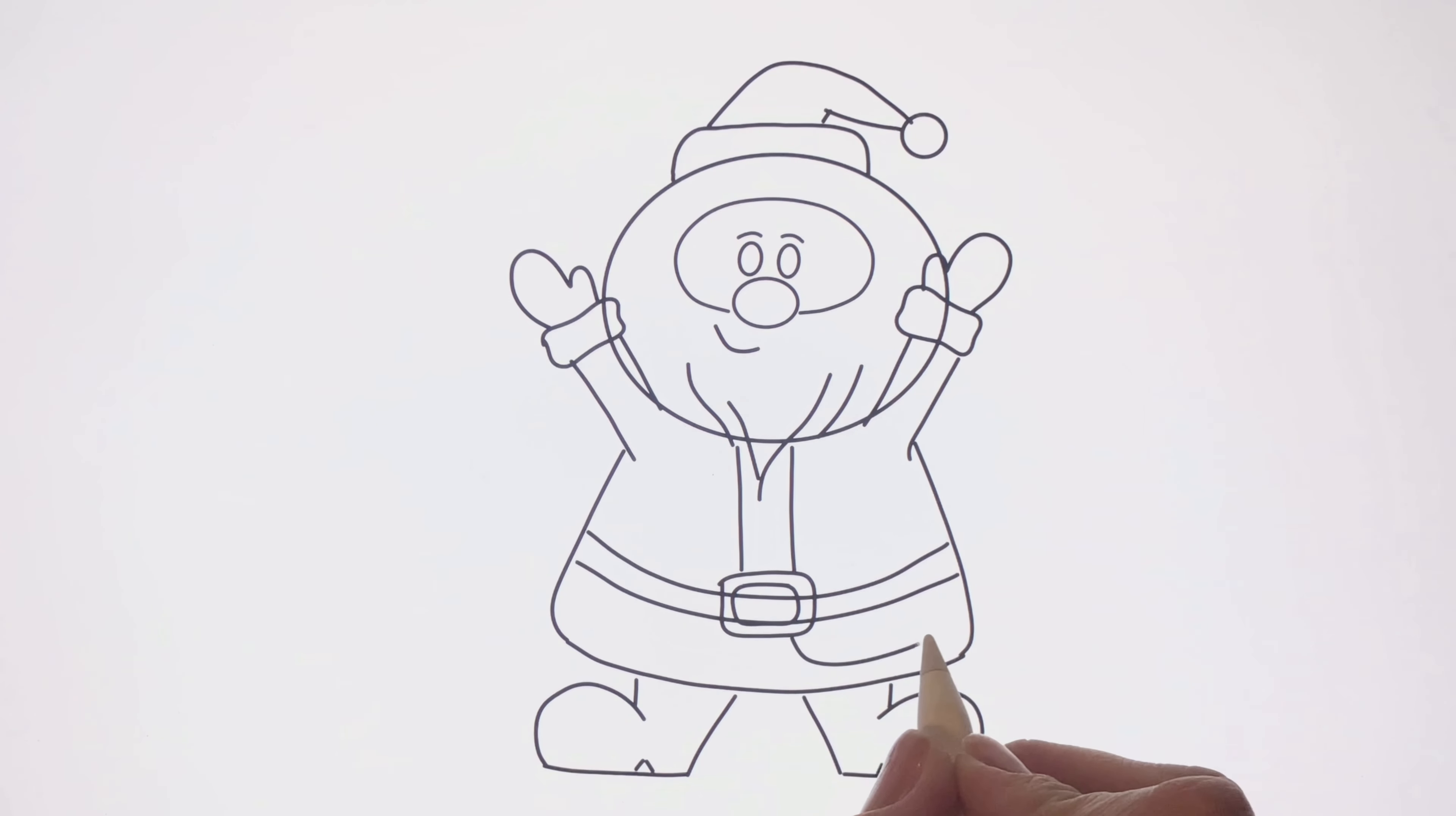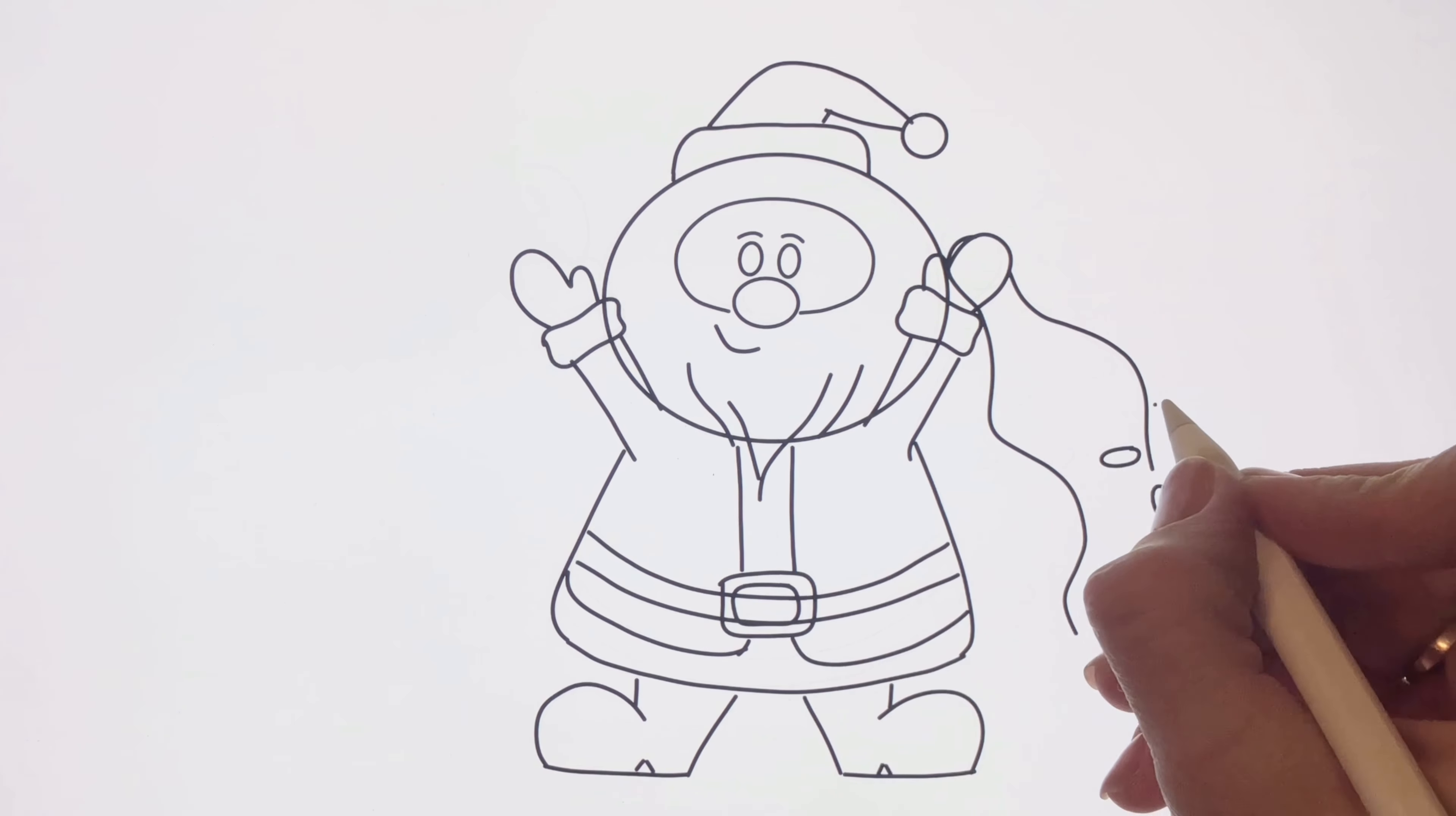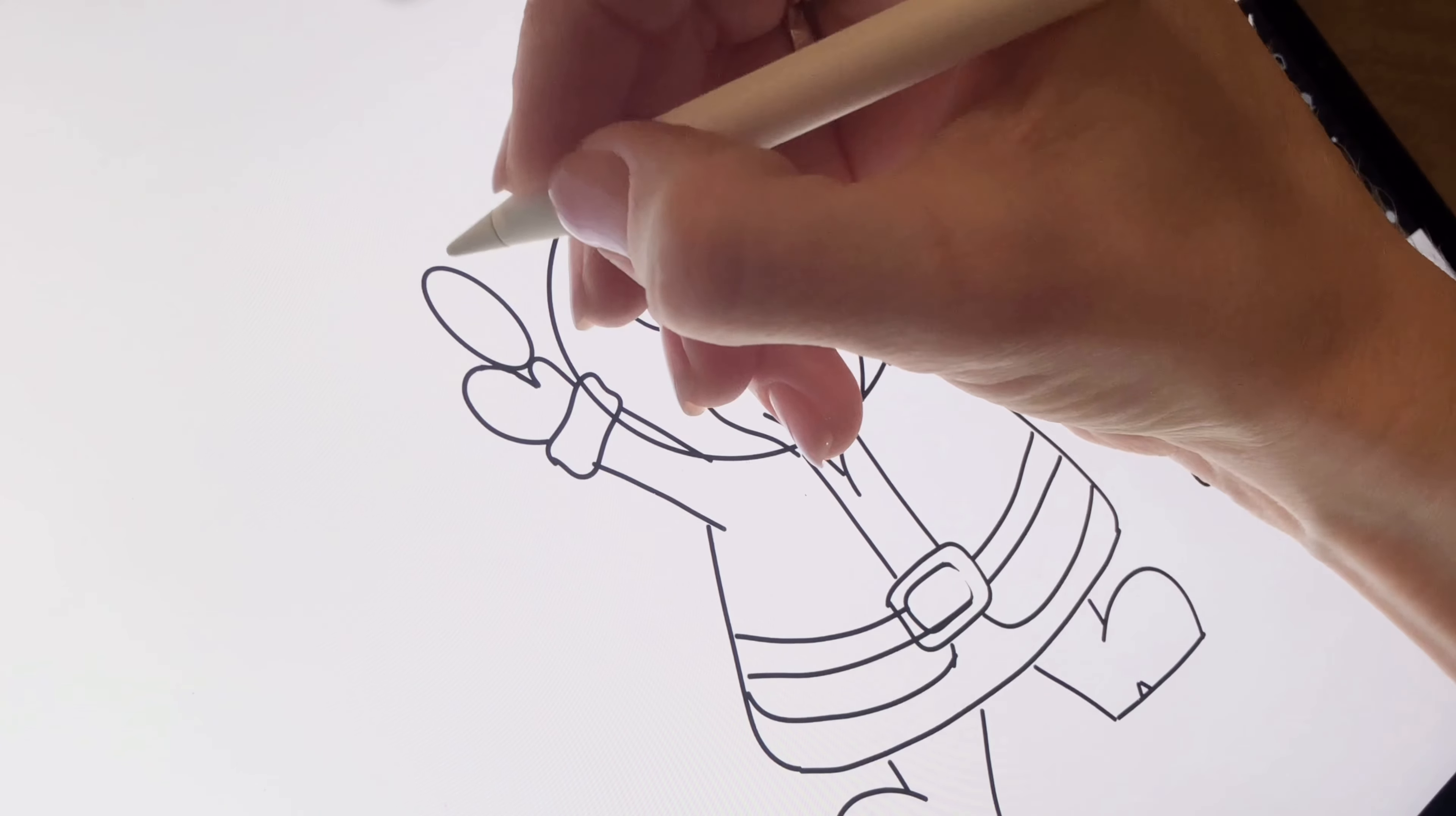Add small details on top of the jacket. Let's draw Christmas lights that Santa is holding in his arm - make lots of small ovals like this. You can use different colors when you color your Santa. Draw a big light that Santa's holding in the other hand, with short stripes around to make it look like it's glowing.